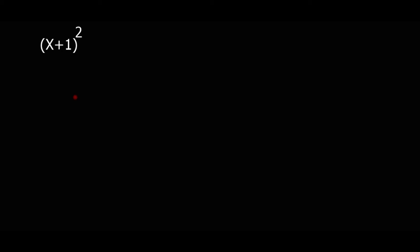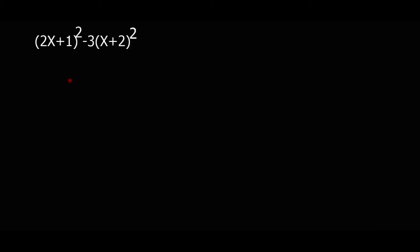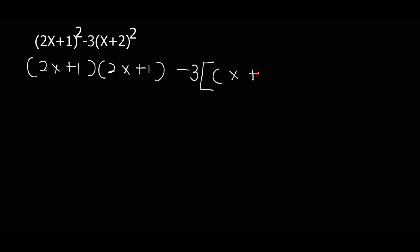Now what if we have something like x plus 1 to the exponent 2? This means x plus 1 times x plus 1. If the exponent were 3, this means the bracket times itself three times. So the first step is to expand the bracket — this means expanding (2x plus 1) times (2x plus 1).